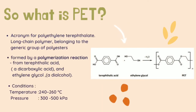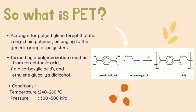PET is an acronym for polyethylene terephthalate, which is a long chain polymer belonging to the generic group of polyesters. PET is formed by a polymerization reaction between an acid and alcohol. It is manufactured from terephthalic acid, a dicarboxylic acid, and ethylene glycol, a dialcohol. The two substances react together to form long polymer chains with water as a byproduct.